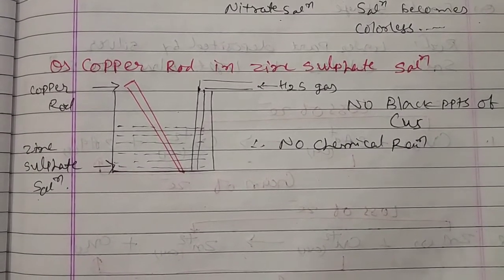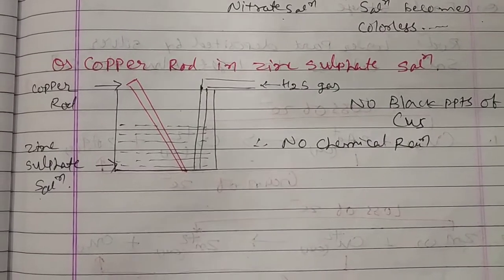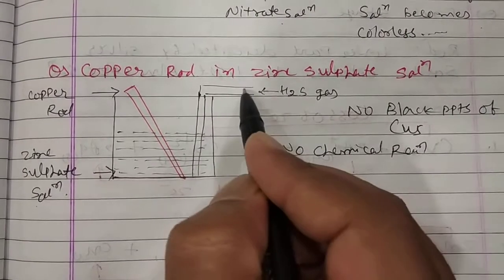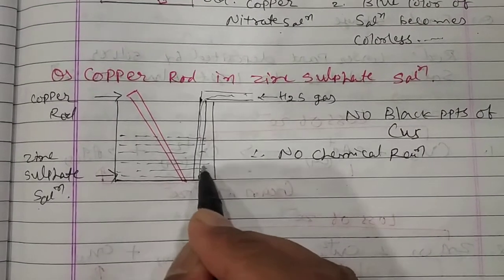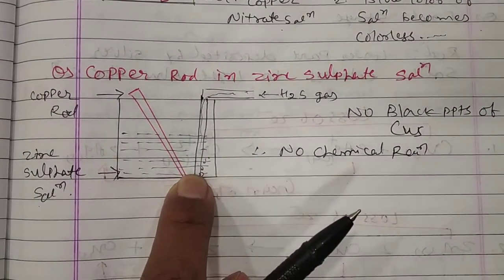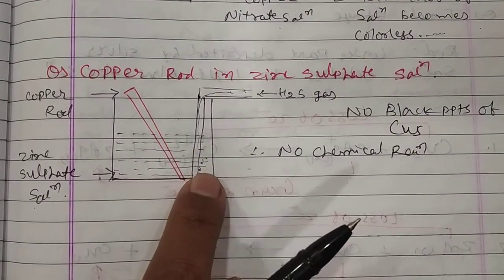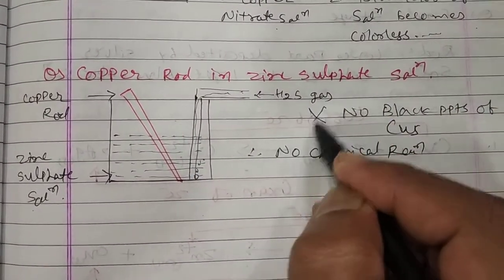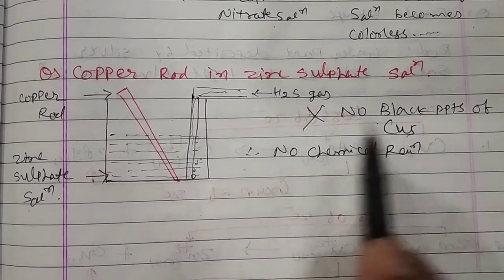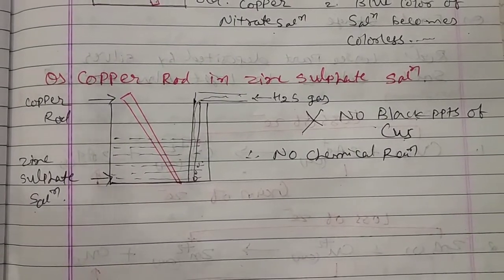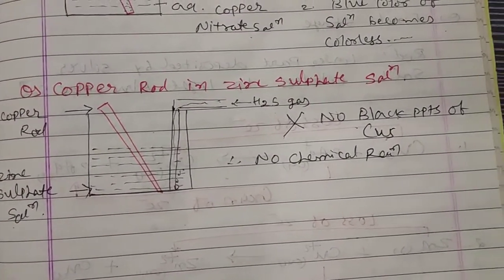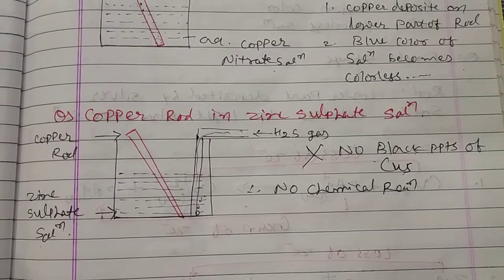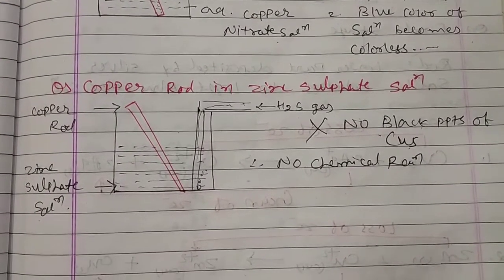If you want to confirm this another way, you can bubble H₂S gas through the solution using a tube. If copper ions were present in the solution, you would get a black color precipitate of CuS. But there is no black precipitate of CuS while passing H₂S gas. This means there is no chemical reaction taking place — no copper has gone into solution.